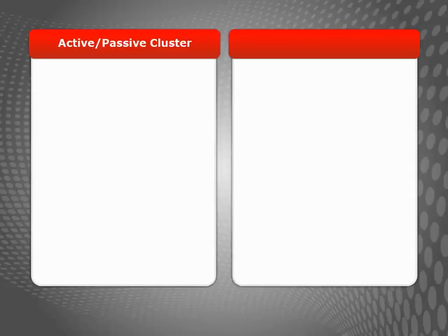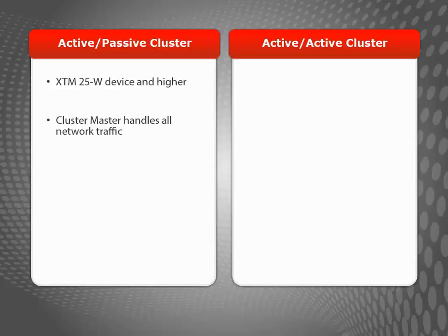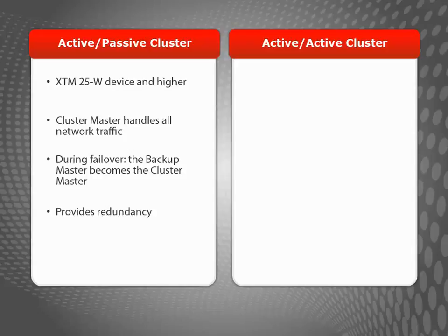When building a FireCluster, you have two configuration options: an active-passive FireCluster or an active-active FireCluster. In an active-passive FireCluster, the active device handles all of the network traffic. If it fails over, the passive device takes over the connections assigned to the failed device. Because the traffic load is handled by only one device at a time, an active-passive cluster provides redundancy but not increased scalability.